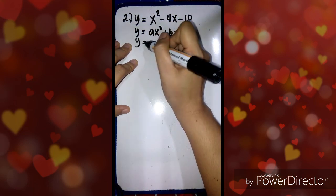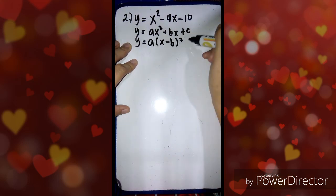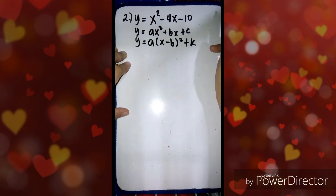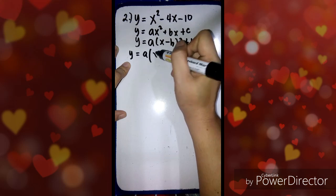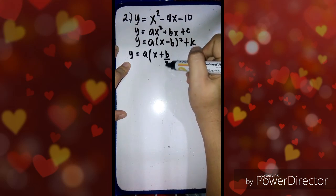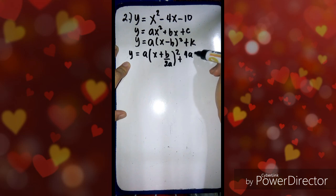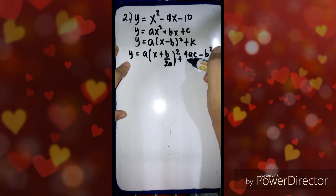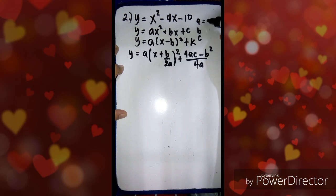Again, we need to use the formula y equals a times the quantity of x plus b over 2a squared, plus 4ac minus b squared over 4a. We're going to follow this formula. But first, we're going to identify what a, b, and c are. So in this example, our a is 1, b is negative 4, and c is negative 10.